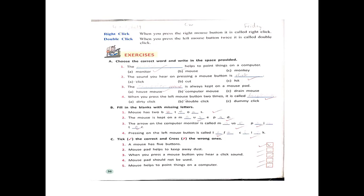Exercise B: fill in the blanks with missing letters. Number one: a mouse has two buttons. Number two: the mouse is kept on a mouse pad. Number three: the arrow on the computer monitor is called mouse pointer.